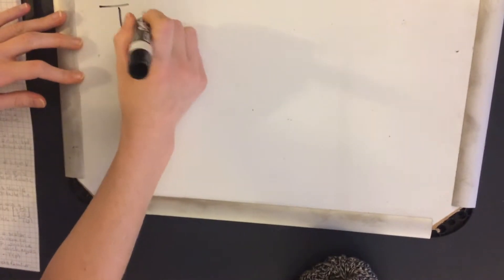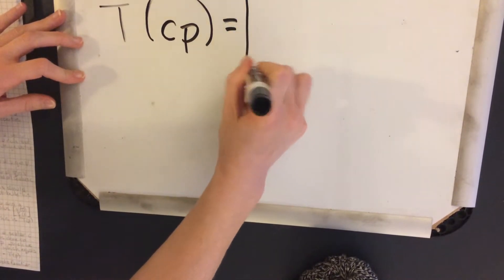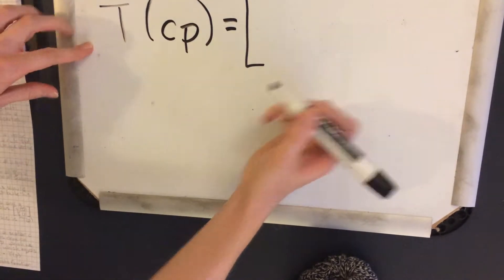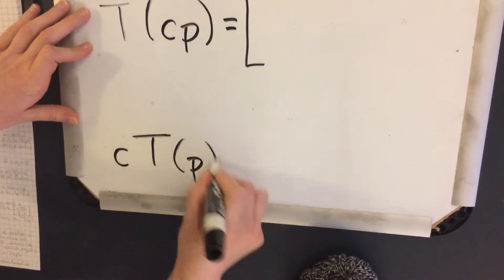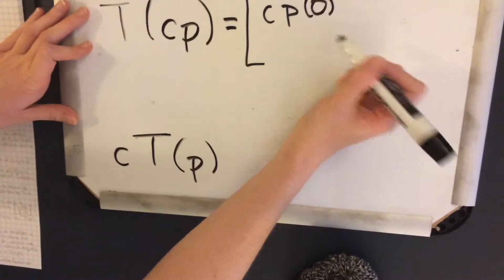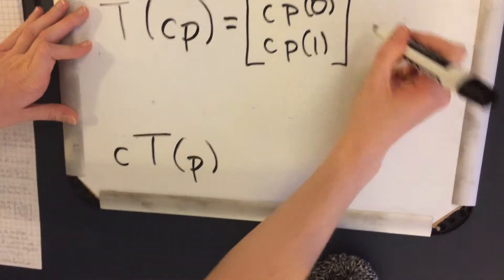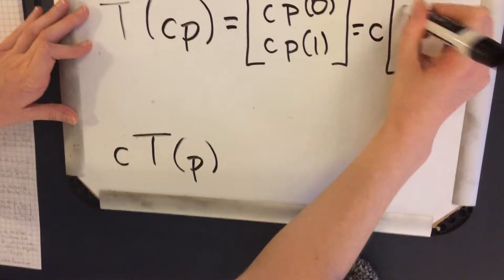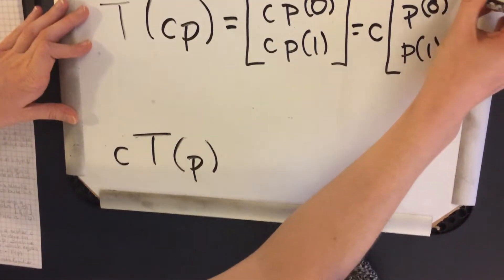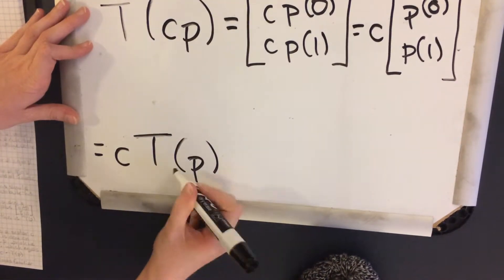So the second one involves a scalar c. And we want to be able to say that this actually equals this. So breaking this up, c times p(0) and then c times p(1), since we know that that's what T(p) was. And then we can take c outside of that. And see that indeed that is c times the transformation of the vector p.